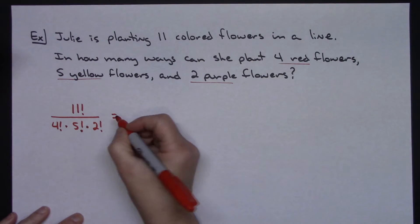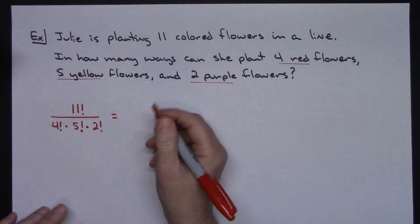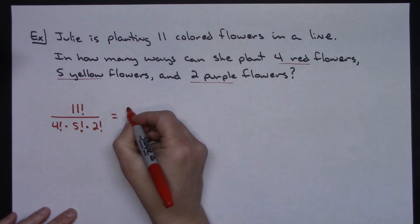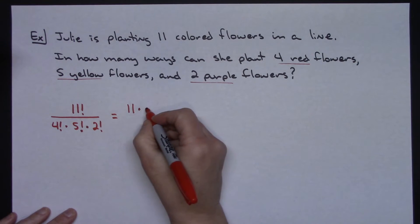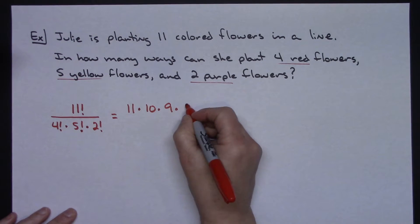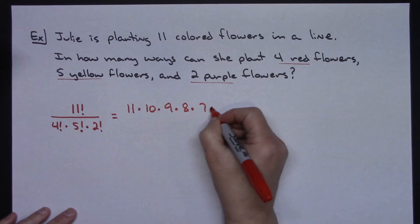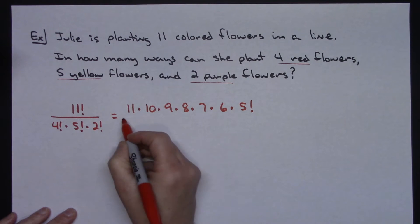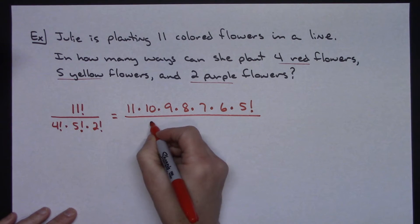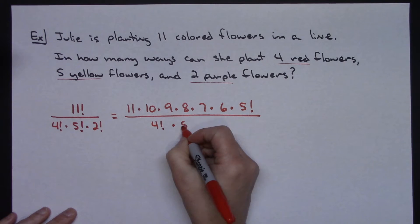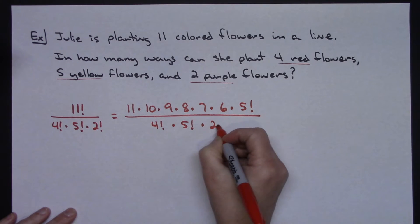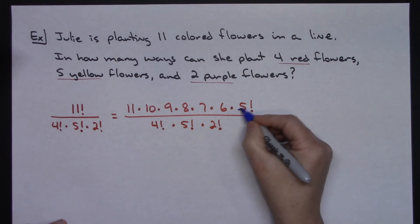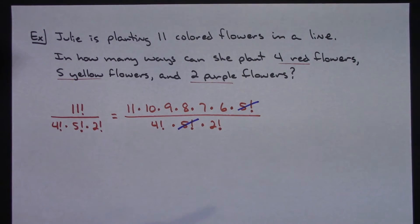Now let's do some simplifying with this as opposed to just grabbing a calculator right away. Let's go ahead and take that 11 factorial down to 5. So 11 times 10 times 9 times 8 times 7 times 6 times 5, and then we're going to leave that as a factorial. And then we've got 4 factorial times our 5 factorial times the 2 factorial on the bottom. That's going to allow me then to cross out the 5 factorials really simply there.